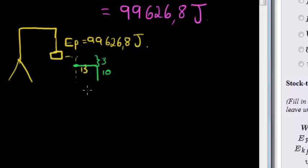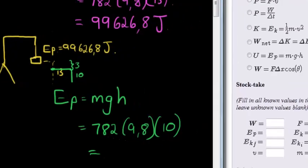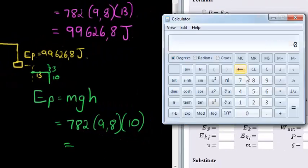So the potential energy this time, still no more difficult than the previous one, the only change is the height. Mass is 782, gravity is 9.8, and height is 10. This time height is 10, when we calculate that, 782 times 9.8 times 10.